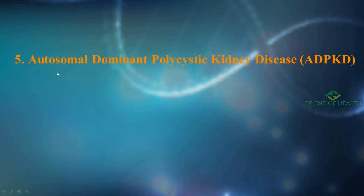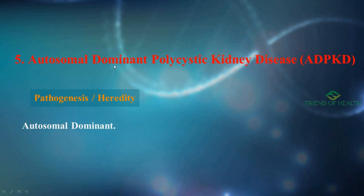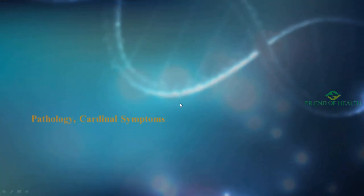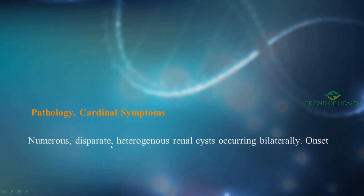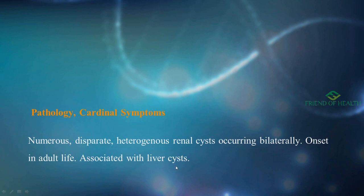The fifth condition is autosomal dominant polycystic kidney disease (ADPKD). It is autosomal dominant. The presentation includes numerous, disparate, heterogeneous renal cysts occurring bilaterally, with onset in adult life — this is very important. ADPKD is also associated with liver cysts. The adult onset distinguishes it from the recessive form.